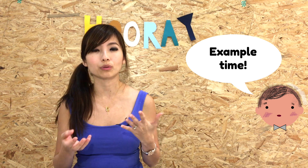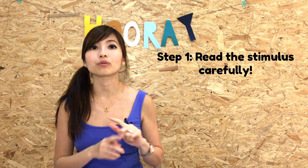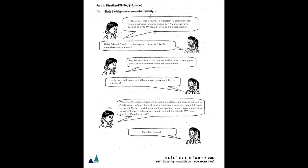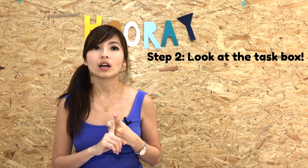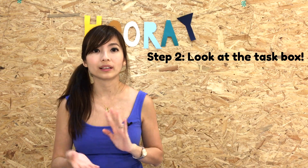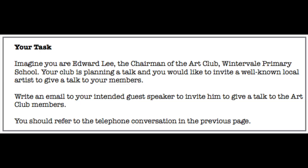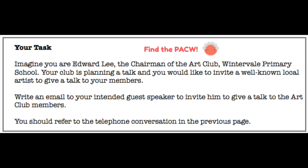Now let's look at an example and run through the process of doing situational writing. Step one: read the stimulus very carefully. Reading the information does not just begin with the picture — sometimes even the heading before you look at the picture counts. Make sure you read every piece of information there. Step two: look at the task box. In this task box, you will find your PACW. Let's take a read now and see whether you are able to pick out the PACW.